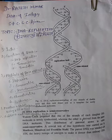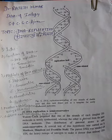DNA replication follows the base pairing rules by which A pairs only with T and G pairs with C. As a consequence of this, each daughter molecule is an exact replica of the parent molecule.